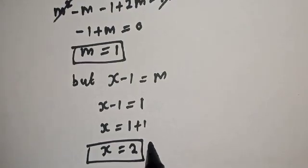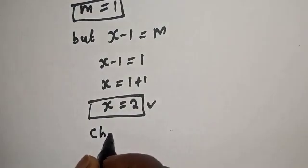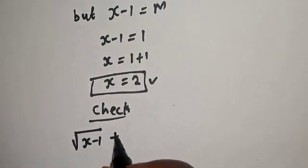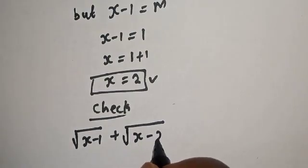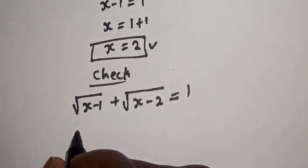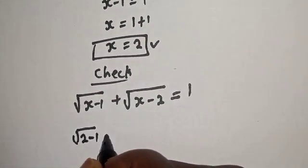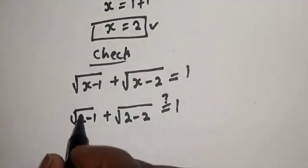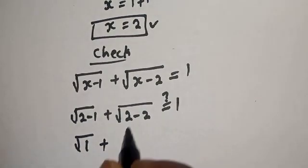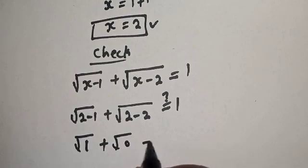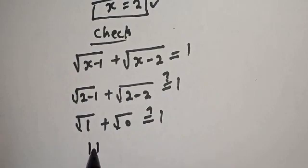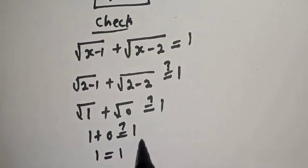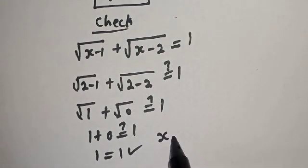Let's check to confirm. Substituting x equals 2 into the original equation: square root of 2 minus 1 plus square root of 2 minus 2 equals square root of 1 plus square root of 0, which equals 1 plus 0 equals 1. The left-hand side equals the right-hand side, confirming x equals 2 is correct.